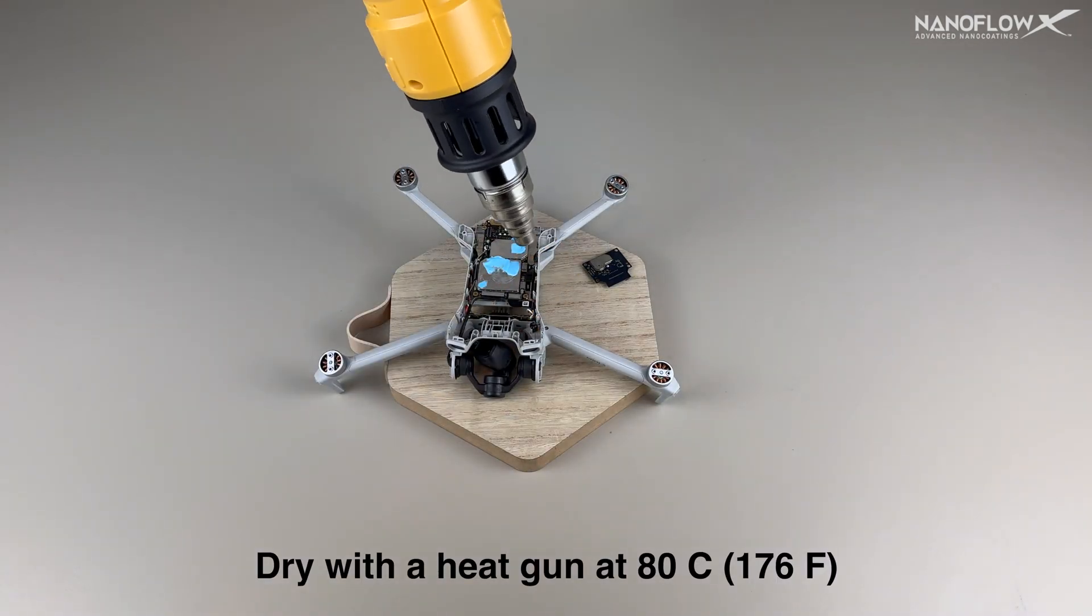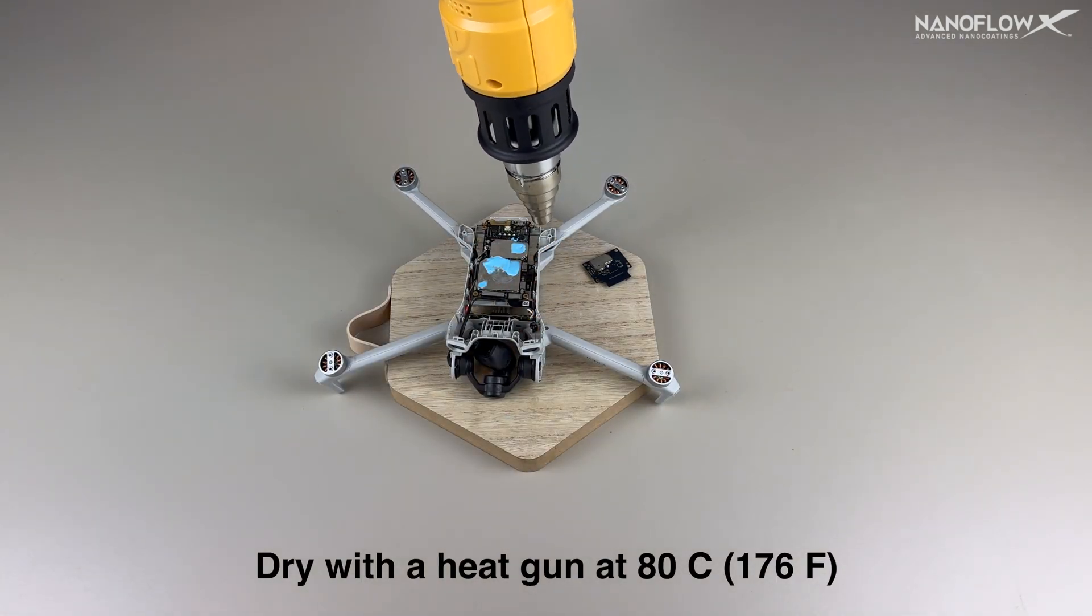Once again, you will dry the PCB with a heat gun at 176 Fahrenheit.